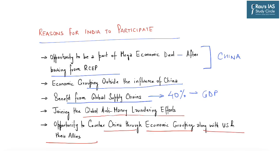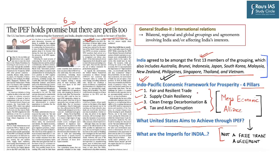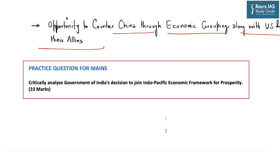It is also an opportunity for India to counter China through economic grouping along with the US and their allies. These can be said to be some of the reasons as to why India has participated in the Indo-Pacific Economic Framework for Prosperity. This topic becomes important from the perspective of GS paper 2 under international relations, specifically with respect to bilateral, regional and global groupings and agreements involving India or affecting India's interests. Based on our discussion, this becomes your practice question: critically analyze the Government of India's decision to join the Indo-Pacific Economic Framework for Prosperity. This question carries 10 marks.